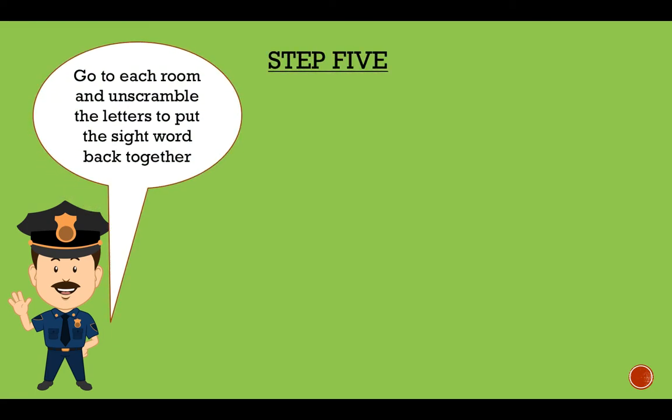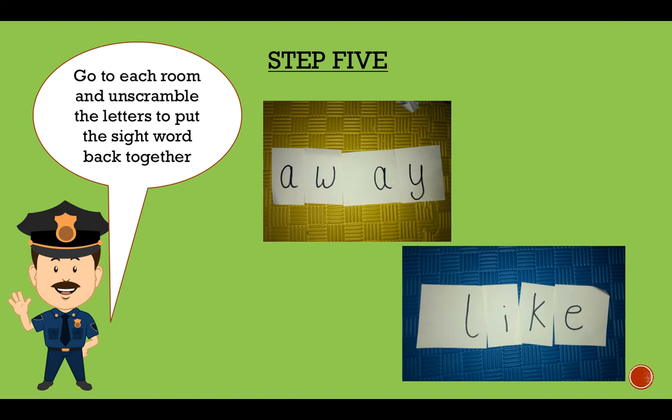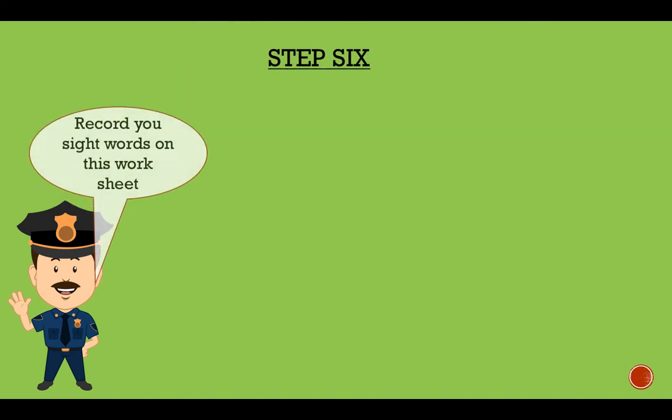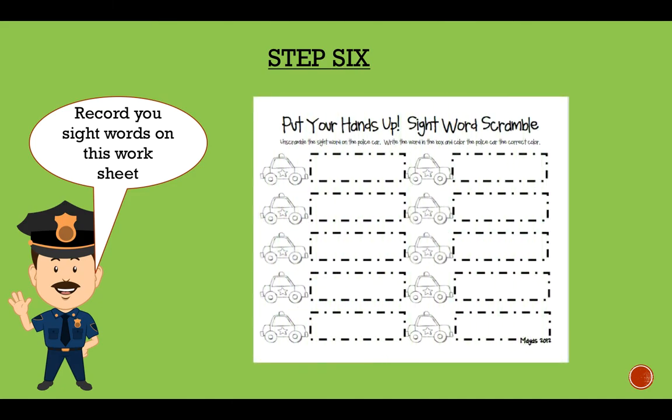Step five. You've got to go to each room after you've hid them all. Go to each room and unscramble the letters to put the sight word back together in the right way, just like you did with me earlier. Step six. When you gather all your words, make sure you write your words on this sheet.